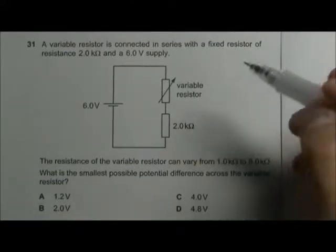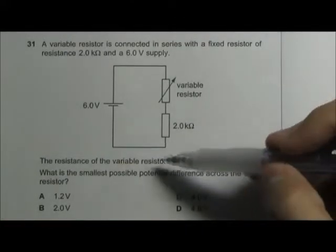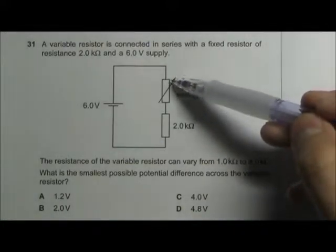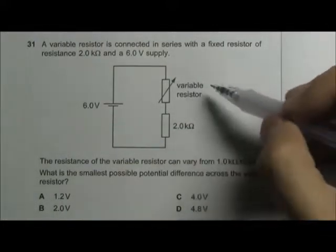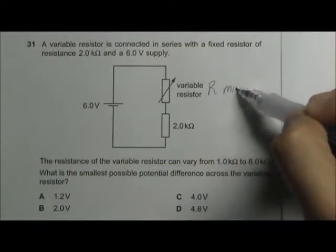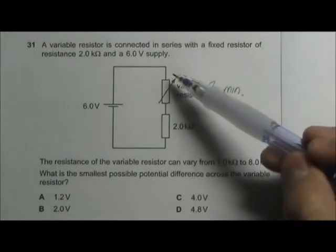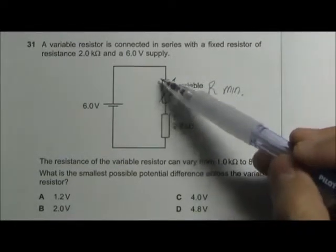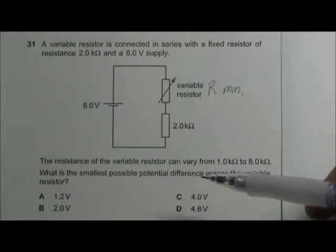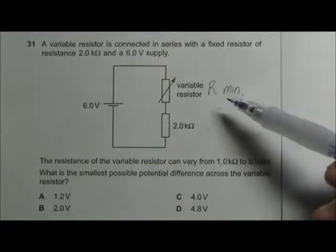This is a potential divider circuit. In order for the smallest potential difference to be registered across the variable resistor, we need the resistance of the variable resistor to be minimum, because the amount of voltage allocated across each resistor is proportional to the resistance. So if the resistance of the variable resistor is lower, it will register a lower potential difference.